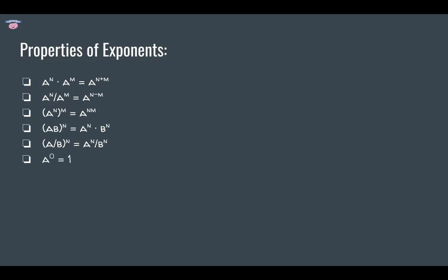a to the power of 0 is equal to 1. You can plug in any value for a and find that it's 1, but a is not equal to 0 because 0 to the power of 0 is undefined. a to the power of 1 is equal to a, which is obvious from our definition of exponents. Now, a to the power of negative n equals 1 over a to the power of n. To prove this: a to the negative n is a to the power of 0 minus n, which looks like the quotient rule. So a to the power of 0 divided by a to the power of n equals a to the power of 0 minus n, and since a to the power of 0 is 1, this is indeed true.